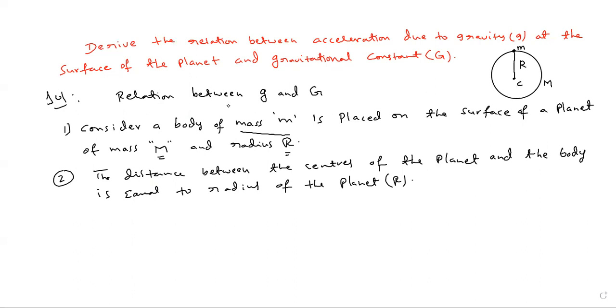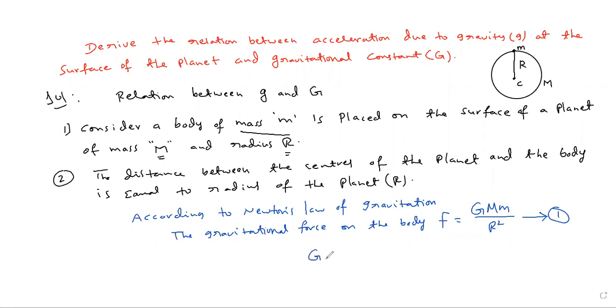Now apply Newton's gravitation, gravitational force concept. According to Newton's law of gravitation, the gravitational force on the body, capital F is equal to capital G, capital M, small m by R square. This is equation number one. G is universal gravitational constant.